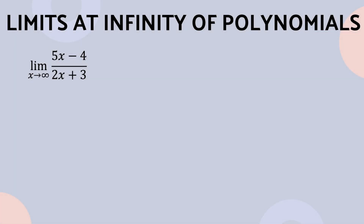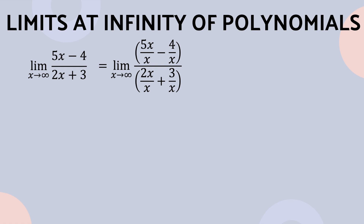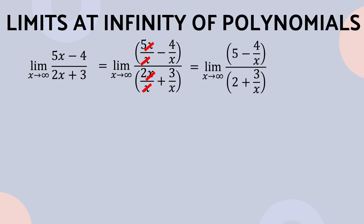Let us have an example. Let's find the limit of 5x minus 4 all over 2x plus 3 as x approaches positive infinity. Divide each term in the numerator and denominator by the largest power of x in the denominator, which is x. Simplify the fractions by canceling x. We're going to have the limit of 5 minus 4 over x, all over 2 plus 3 over x, as x approaches positive infinity.